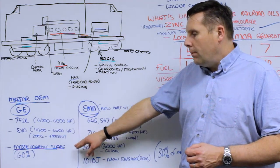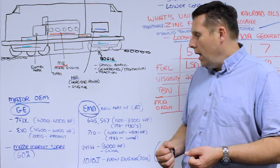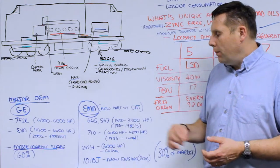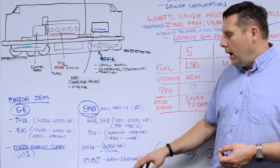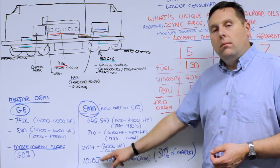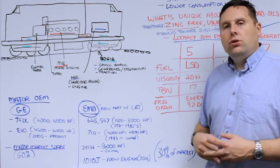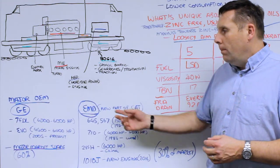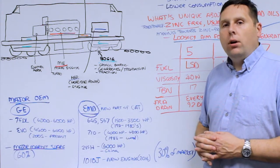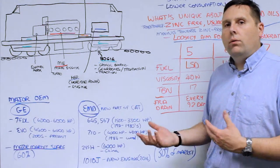GE has about 60% of the market for freight applications. EMD, part of Cat, has major engines including the 645, 710s, and newer engines up to the 1010J, which is designed for emissions control and is the latest generation. Between these two manufacturers, they have several hundred thousand engines in the marketplace, both domestically in the US and throughout the world.